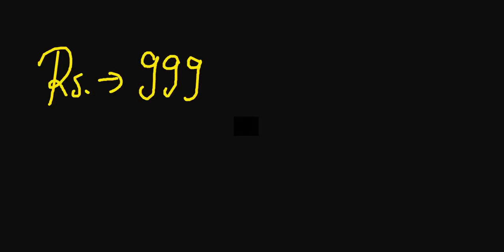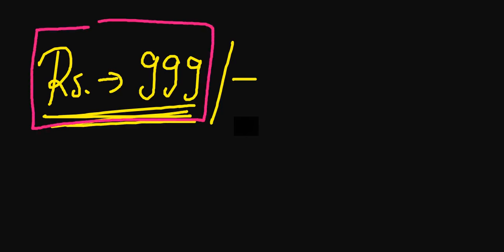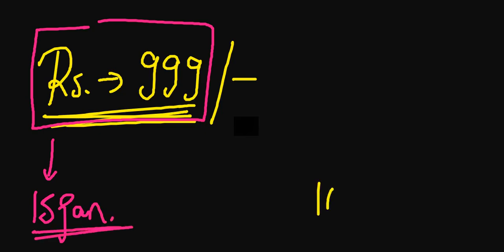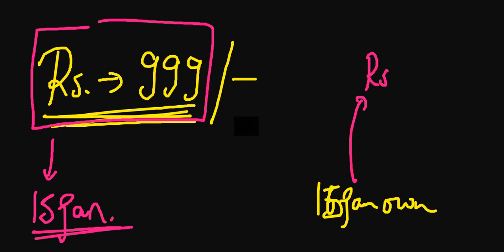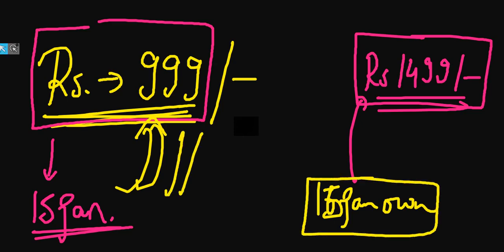Most of you are from the English medium, so the English version is what you'll need. The pre-booking price is ₹999 only. However, if you order from 15th January onwards, the price increases to ₹1499 for the same book. Make sure to order before 15th January to benefit from the early bird offer. After the 15th, orders may not be accepted, so act within this time period.